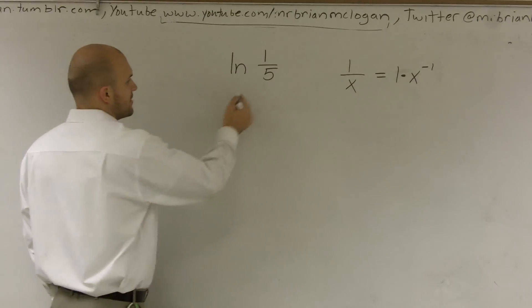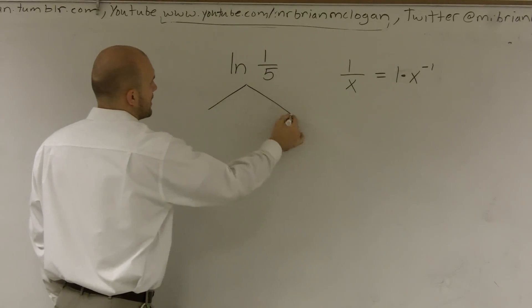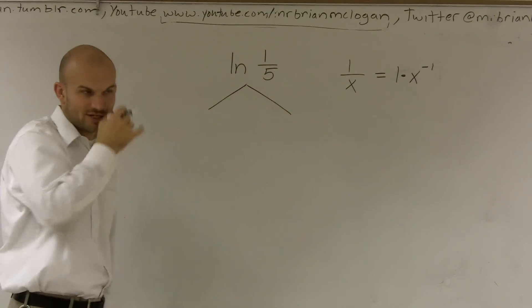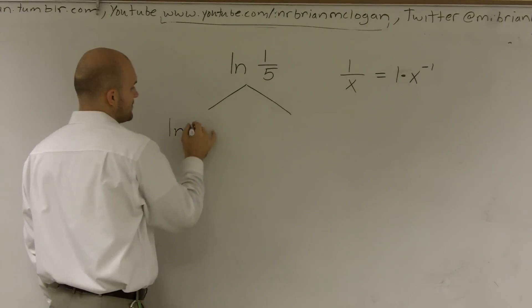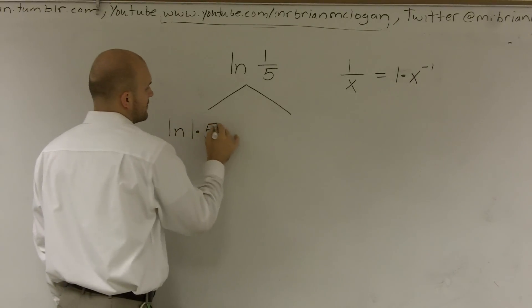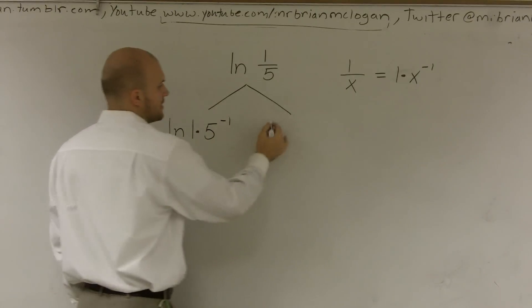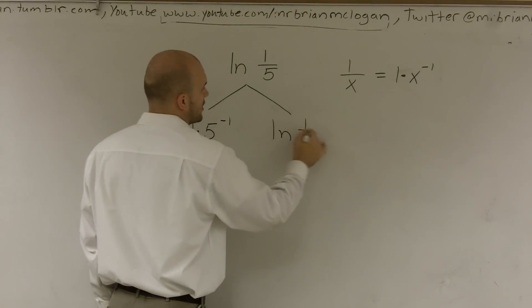So for this problem, I'm going to do this two different ways. I'm going to first do this by changing my 5 to 5 to the negative first power. So I'm going to say ln of 1 times 5 to the negative first power. And here I'm going to solve it as ln of 1 over 5.